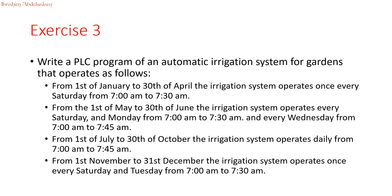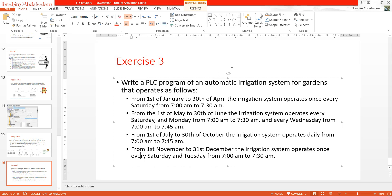Let's have a small case study — Exercise 3. Write a PLC program for an automatic irrigation system for a garden that operates as follows: From 1st January to 30th April, the system operates once every Saturday from 7:00 to 7:30. From 1st May to 30th June, it operates every Saturday and Monday from 7:00 to 7:30, and every Wednesday from 7:00 to 7:45. From 1st July to 30th October, it operates daily from 7:00 to 7:45. From 1st November to 31st December, it operates every Saturday and Tuesday from 7:00 to 7:30.